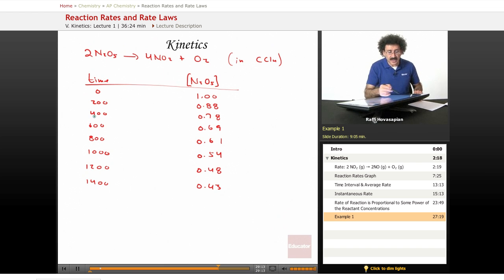So we have this set of data that we collected. At different time increments, we measured the concentration of the N2O5. And sure enough, it is decreasing.